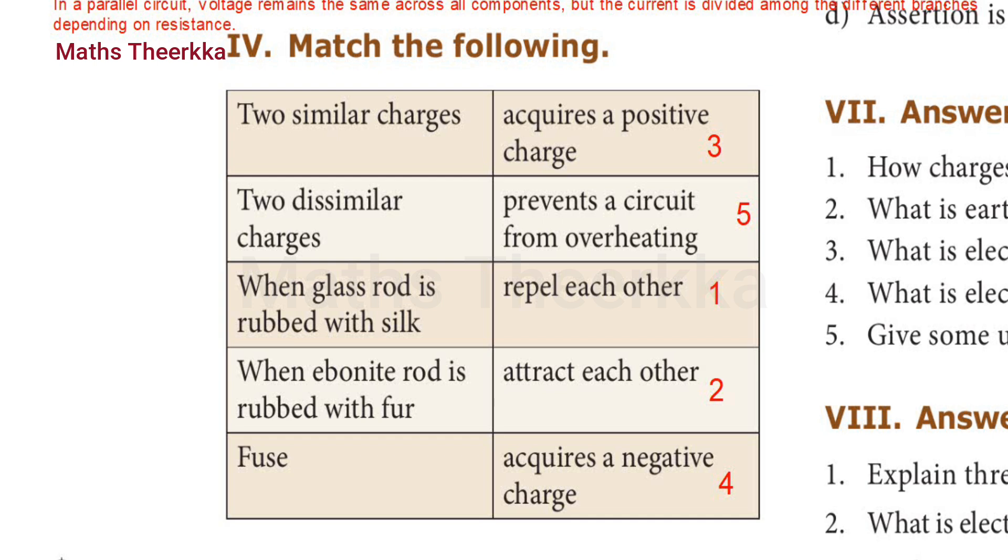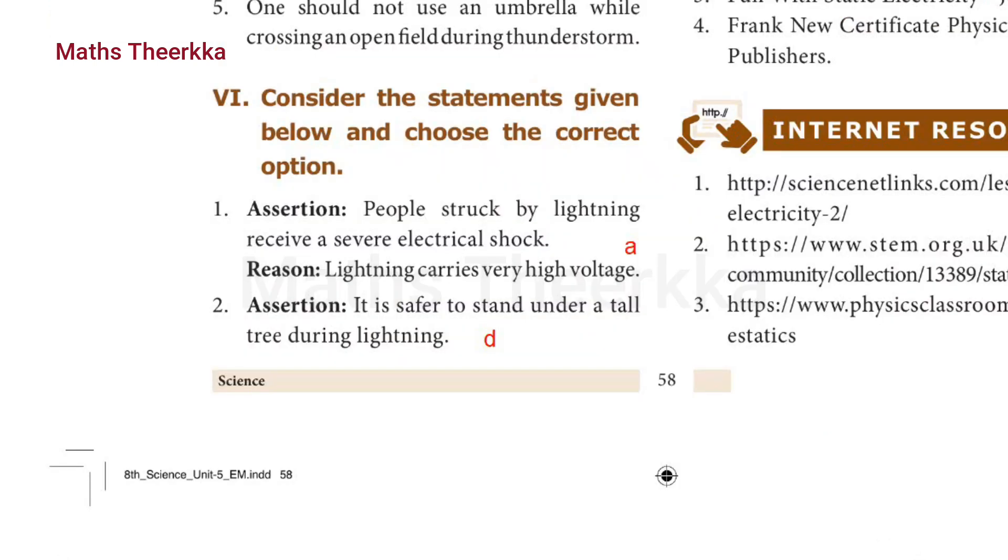Sixth roman: consider the statement given below and choose the correct answer. First one: assertion - people struck by lightning receive a severe electric shock. Reason - lightning carries very high voltage. The answer is option a: both assertion and reason are true and reason is the correct explanation of assertion.